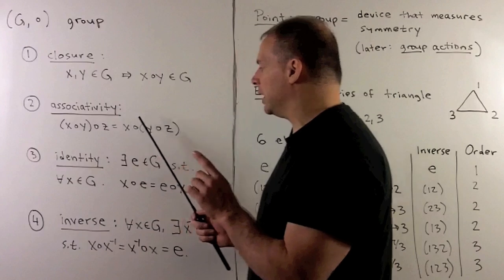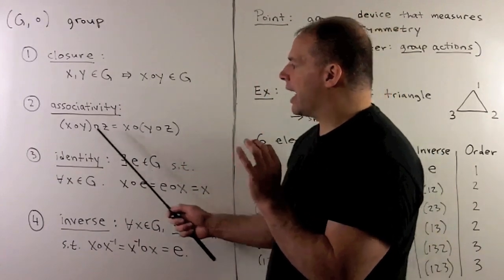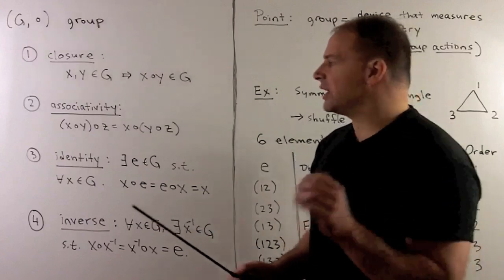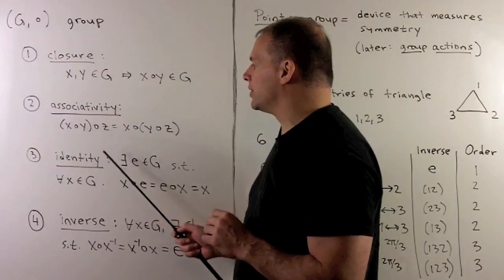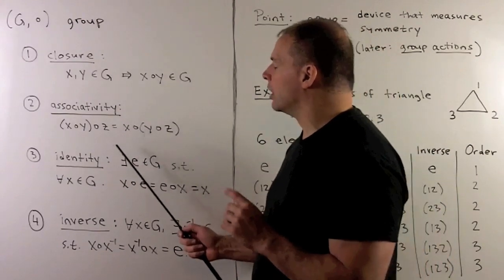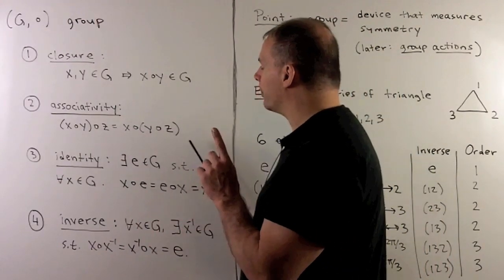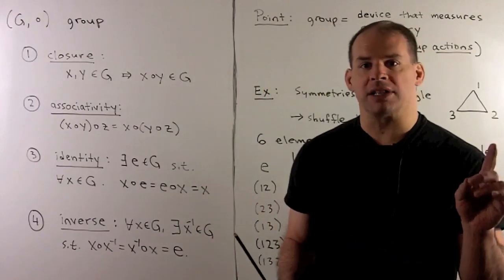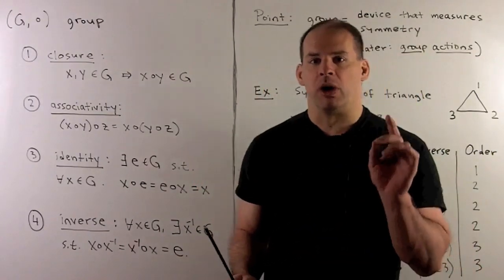Next, we have associativity. This tells us how we can multiply three elements. If we multiply the first two elements and then the third, we get the same answer as if we multiplied the last two elements and the first, as long as we go in the same order. In practice, we don't need to use parentheses.